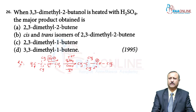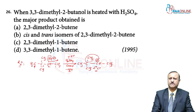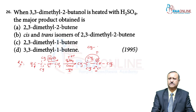A tertiary carbocation is obtained by the shifting of the CH₃ group. When the 1,2-methyl shift occurs, the CH₃ group migrates from the third carbon to the second carbon atom, forming the more stable tertiary carbocation: (CH₃)₂C⁺–CH₂–CH₃.